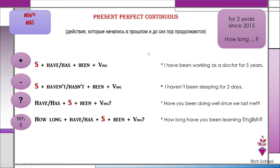In all continuous tenses, there should be two parts: one of them is 'to be,' and the second is verb-ing. If it's present continuous, it's am/is/are + verb-ing — 'I am sleeping.' If it's past continuous, it's was/were + verb-ing — 'I was sleeping yesterday at this time.'